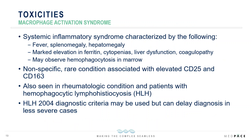Macrophage activation syndrome (MAS) is a rare toxicity characterized by fevers, splenomegaly, hepatomegaly, hyperferritinemia, pancytopenia, hepatic dysfunction, and coagulopathy. Hemophagocytosis may or may not be observed in the bone marrow and is not required for diagnosis. This condition is associated with elevations in CD25 and CD163, which can support clinical diagnosis. It is most commonly seen in patients with rheumatologic conditions and in patients with hemophagocytic lymphohistiocytosis.